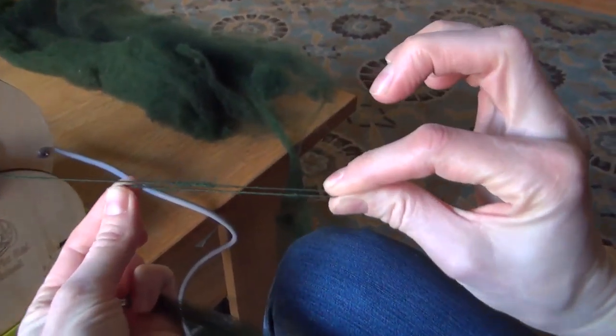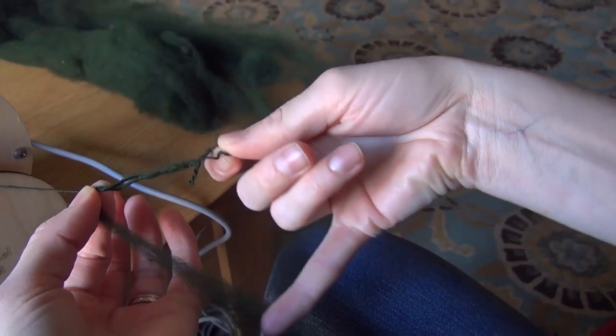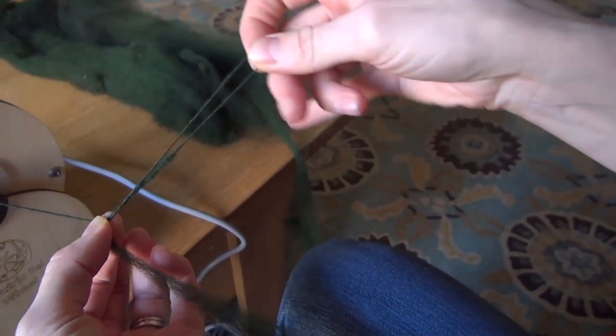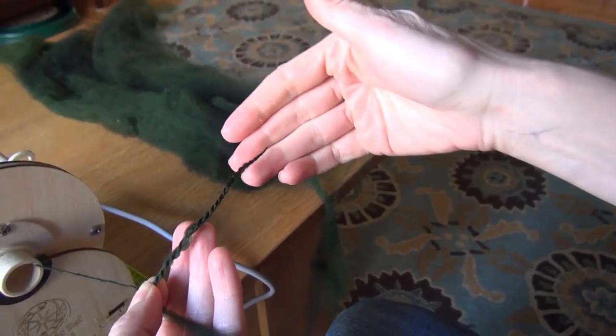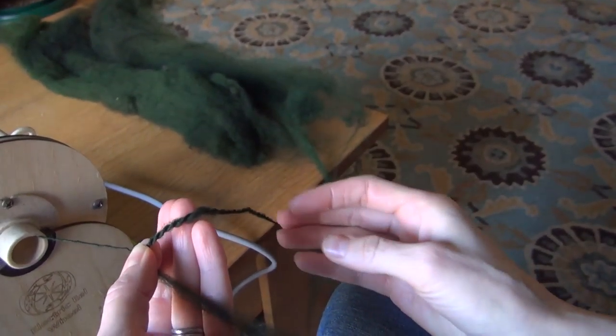If you fold it back on itself, you want to keep this pinch so the spin doesn't travel up your yarn. I just gave it a little twist and this is what my yarn is going to look like if it's plied.